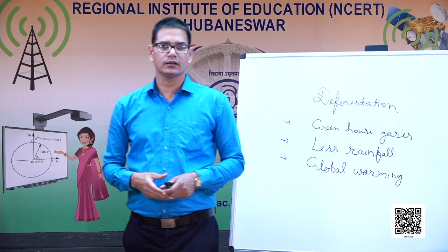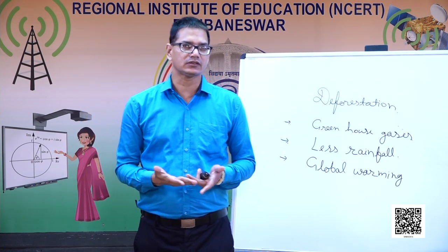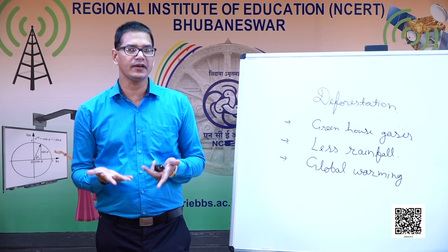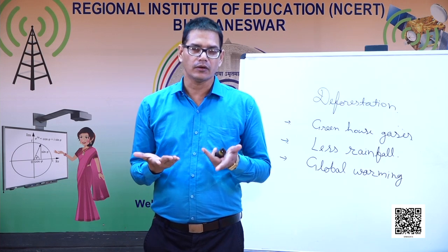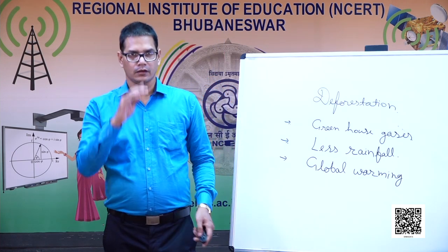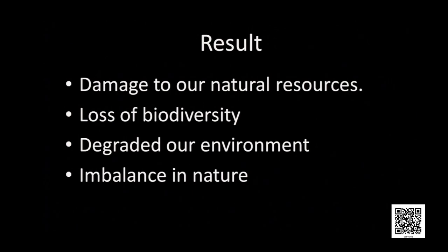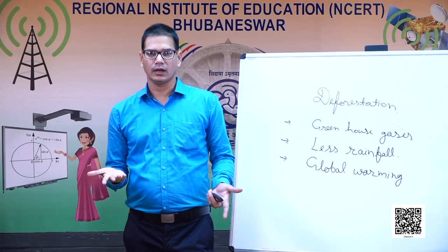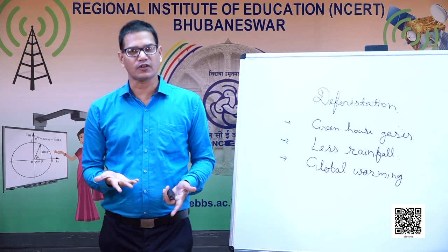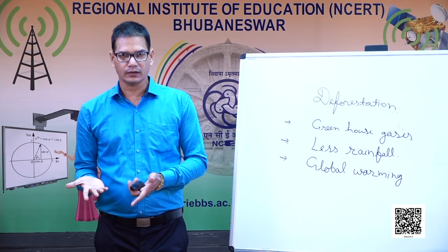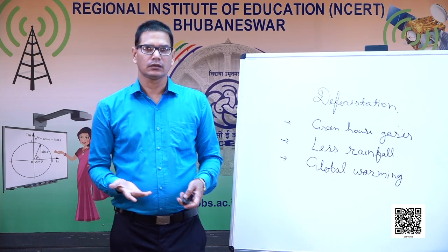We can see the bad impact of using natural resources during the Green, Blue, and Yellow Revolutions. The result is damage to our natural resources, loss of biodiversity — many plants and animals were lost — degraded environment, and imbalance in nature. Due to global warming, the temperature of the Earth increases day by day and we suffer from drought, untimely rain, and many other natural calamities.